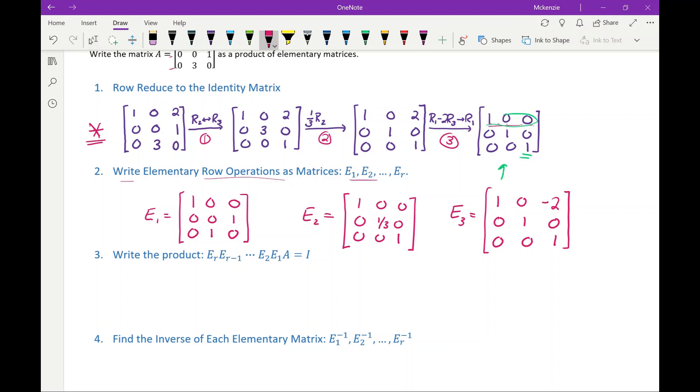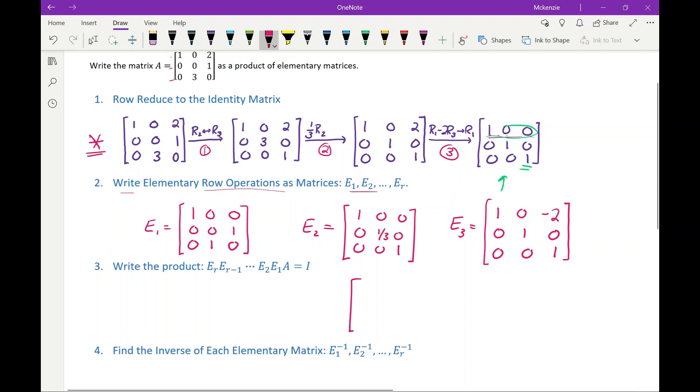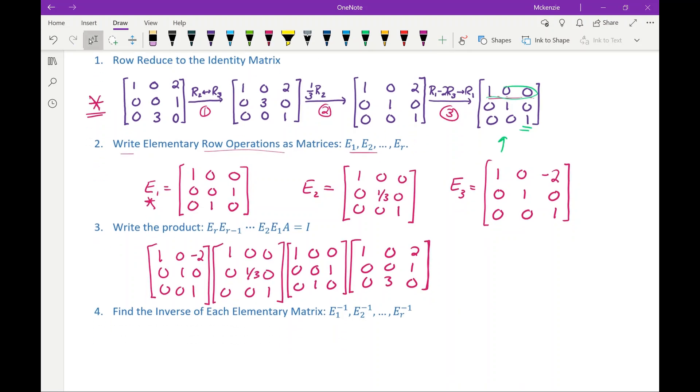And the reason that we can write it like this is because we can say, then starting, if A is our original matrix, 1, 0, 2, 0, 0, 1, 0, 3, 0. To apply these operations to the rows, we multiply on the left by the matrix. So the first operation we did was swap row 2 and 3. So that's the elementary matrix that's going to be closest to the matrix A. And then the second one, 1, 0, 0, 0, 1, 3rd, 0, 0, 0, 1. And then lastly, we have the third elementary operation we did.